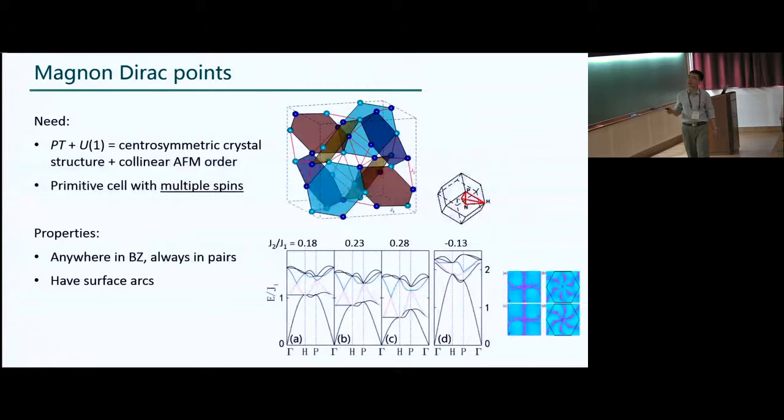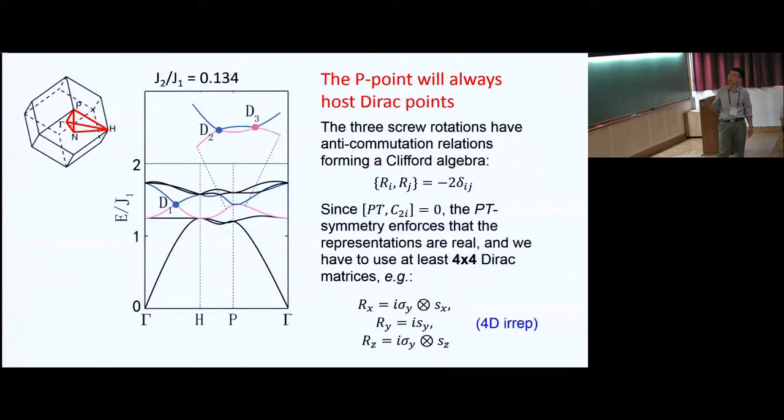Now, just to demonstrate that the general theoretical consideration is correct, we then plug in this toy model with J1 and J2 interaction, and we play with J2 over J1 ratio over a wide range, and we always get this kind of band crossing. It's very stable. And you can also look at surface states, and, yeah, indeed, they have arc-like surface states. Now, it turns out that the high space group symmetry of this system also allows us to mathematically prove that the Brillouin zone P-point will always be a Dirac point by using this Clifford algebra. I won't have time to go into detail of that, but just to remember, the P-point will always be a Dirac point. And that's experimentally very convenient because then we know where to look at.